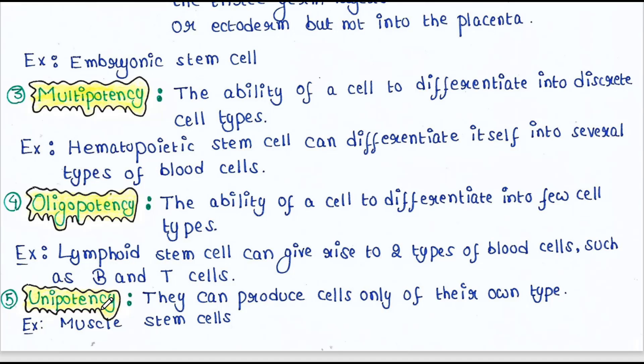And last is unipotency. Unipotent cells can produce cells only of their own type. An example is muscle stem cells.